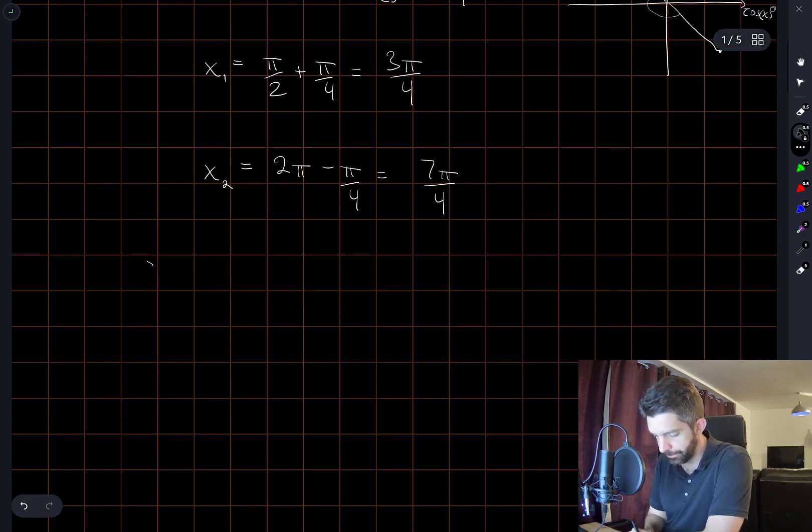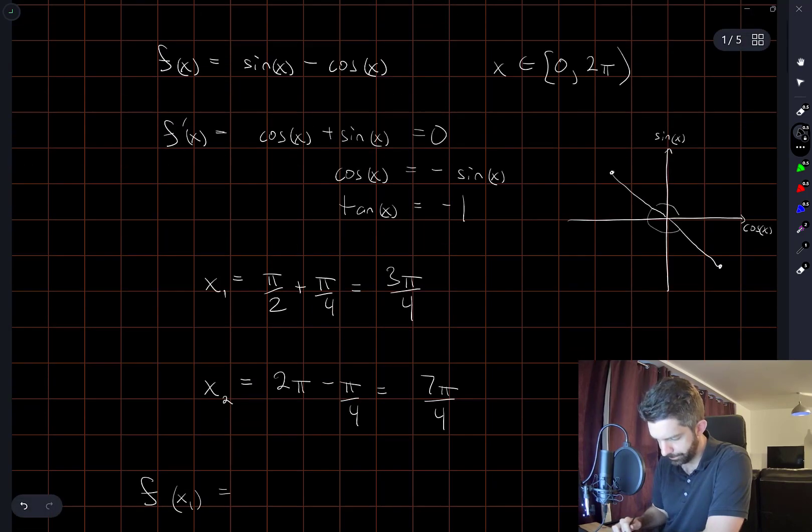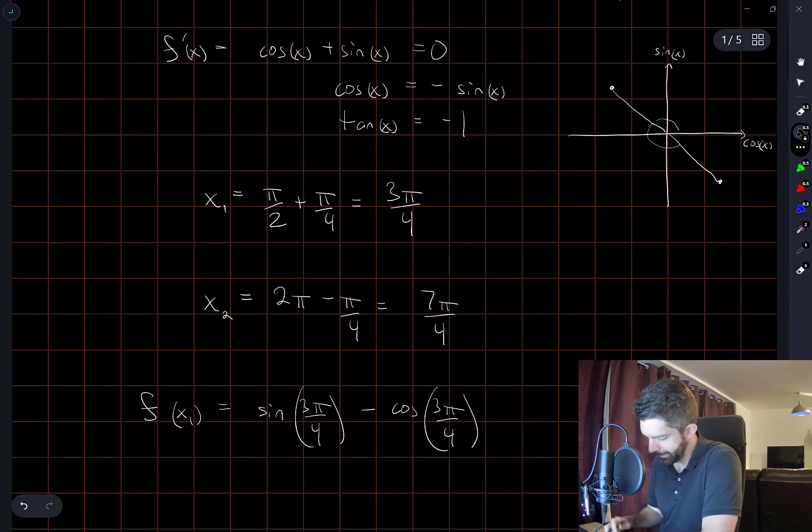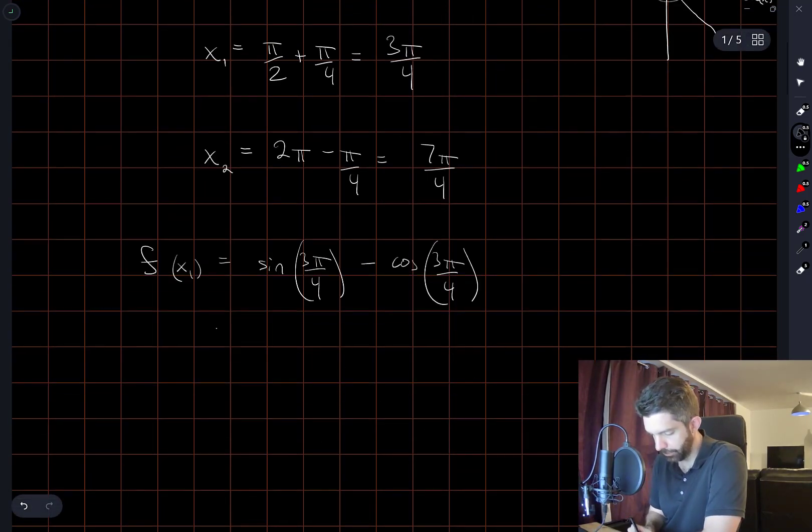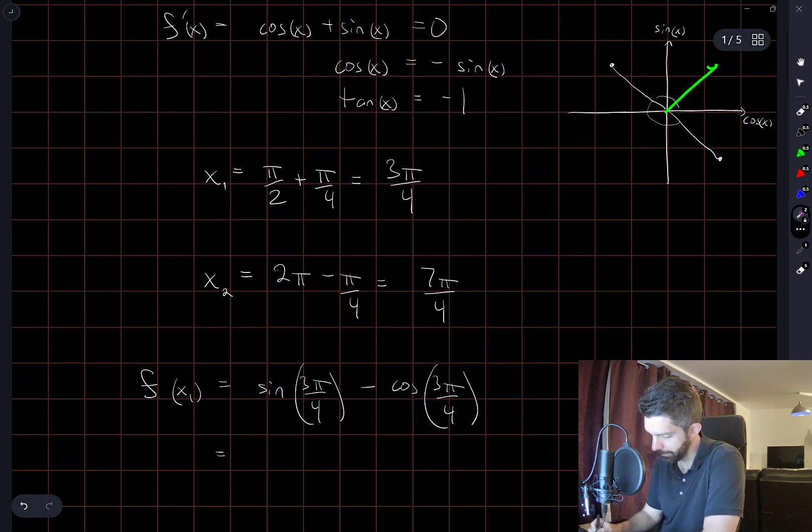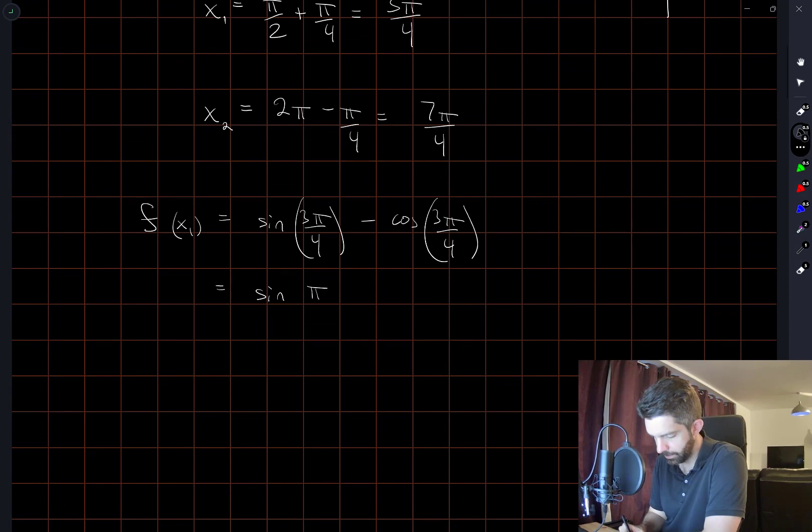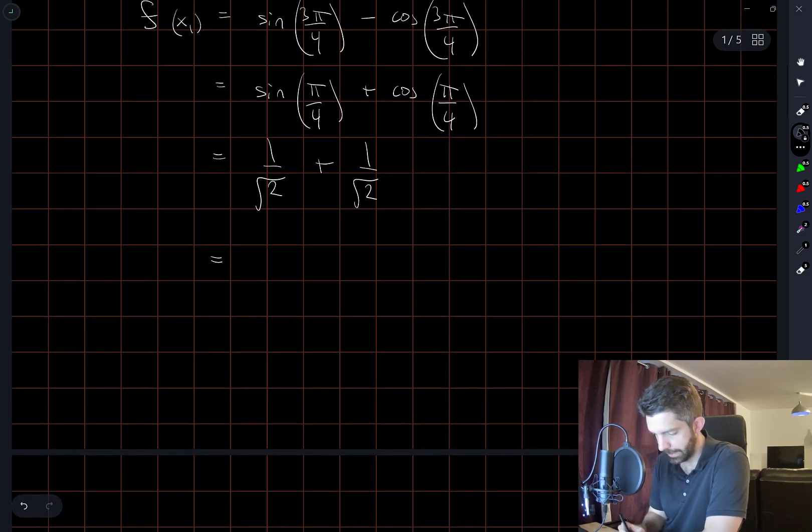So let me now evaluate the function at these two points. f of x1 is equal to sine of 3π over 4 minus cosine of 3π over 4. Oh goodness, okay, well this using some identities and maybe you can see this from the geometry here too. I'm looking at this point here, right, where the angle is 3π over 4. So it's the same as this point here except one of the coordinates has been reflected. So this is the same as sine of π over 4 plus cosine of π over 4. And this is equal to 1 over root 2. And this is equal to 1 over root 2. So I get 2 over root 2 which is equal to root 2.